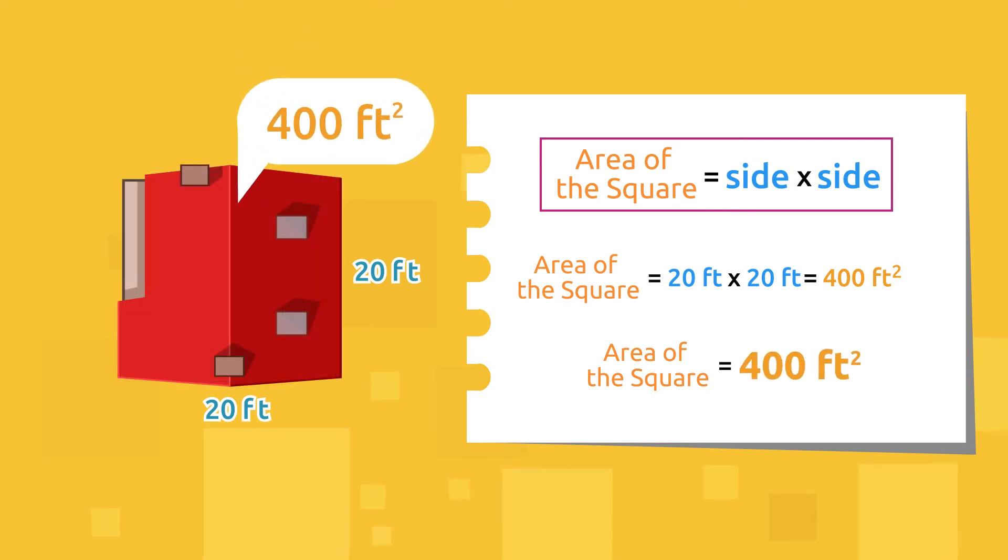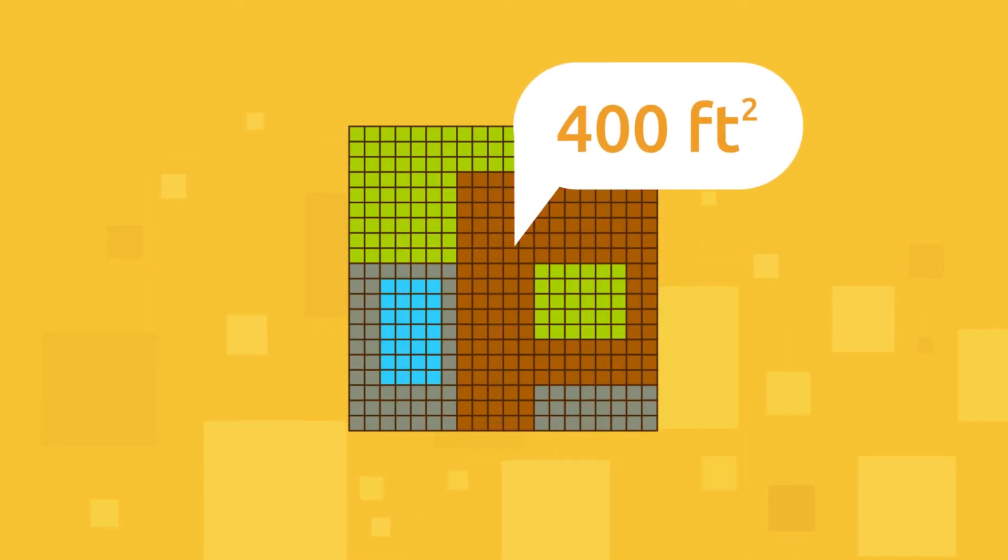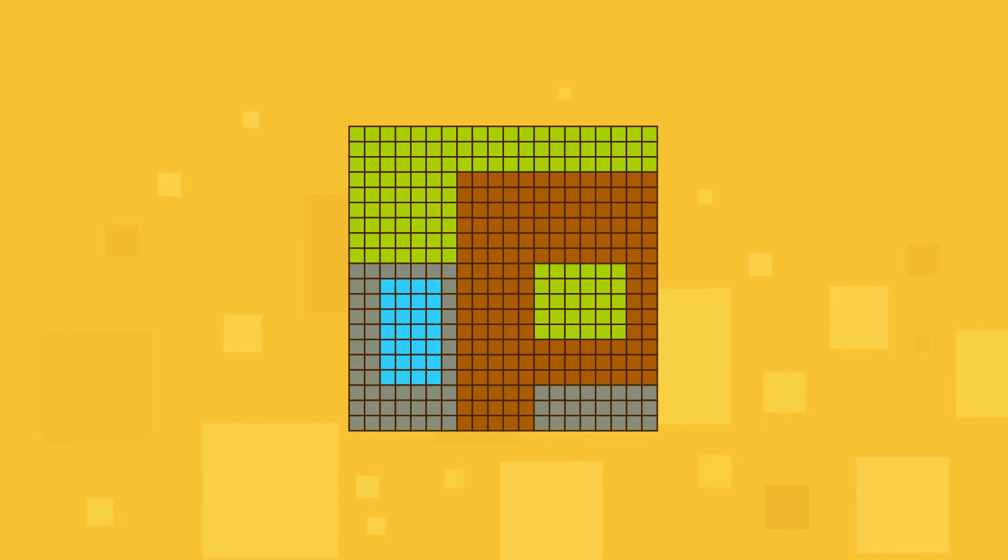Pay close attention. If we were patient enough to count each square, we would see that there are exactly 400 squares measuring one square foot each.